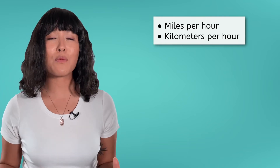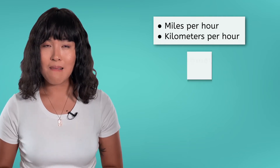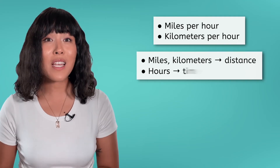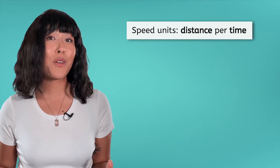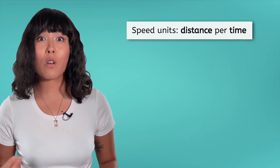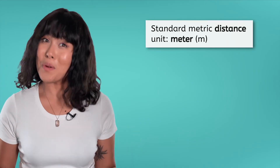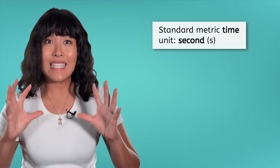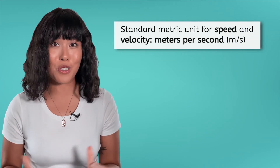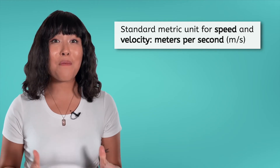Remember, we said that the units for speed are compound — they are made of two simpler units. Thinking about the two examples we've looked at already, miles per hour and kilometers per hour, what two types of units make up a unit for speed? Miles and kilometers are both units of distance, while hours is a unit of time. So speed units always have one unit for distance and one unit for time. This will help us figure out the standard metric unit for speed or velocity. What is the standard metric unit for distance? You may have just thought meter, and you would be right. What about time? You might guess hours or maybe minutes, but it's actually seconds. So what must be the standard unit for speed? Meters per second, often abbreviated m/s.